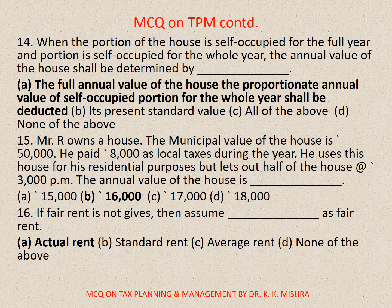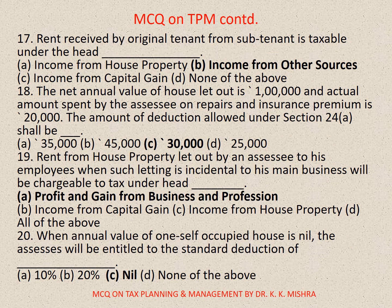Question number 16: If fair rent is not given, then assume — as fair rent. Correct option is A: Actual rent. Question number 17: Rent received by the original tenant from a sub-tenant is taxable under the head — correct option is B: Income from other sources.